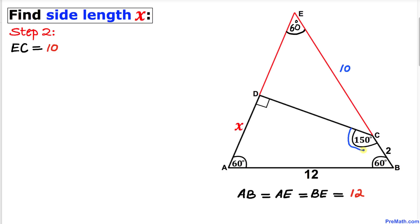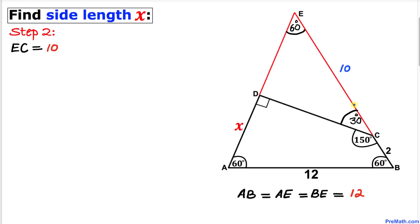We can see that angle C is 150 degrees, and the full straight angle is 180 degrees. So this supplementary angle has to be 180 minus 150, which equals 30 degrees.